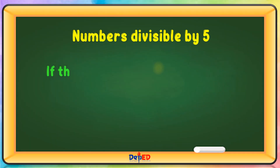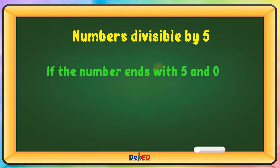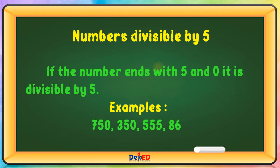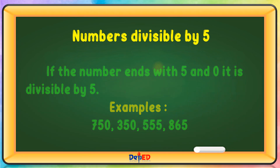Numbers divisible by 5: If the number ends with 5 and 0, it is divisible by 5. Examples: 750, 350, 555, 865.